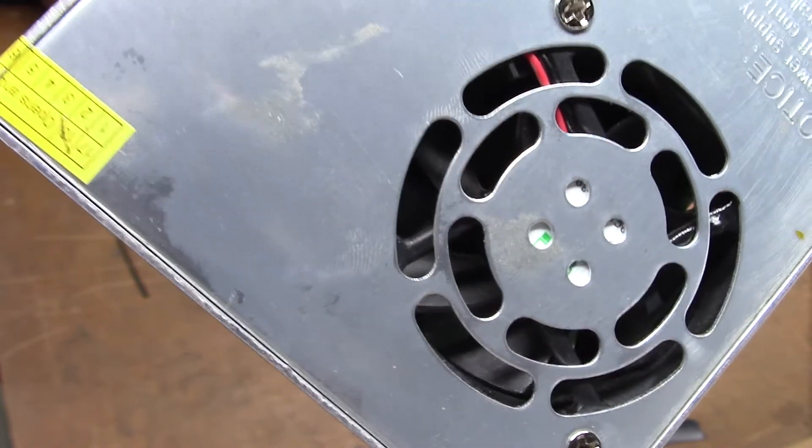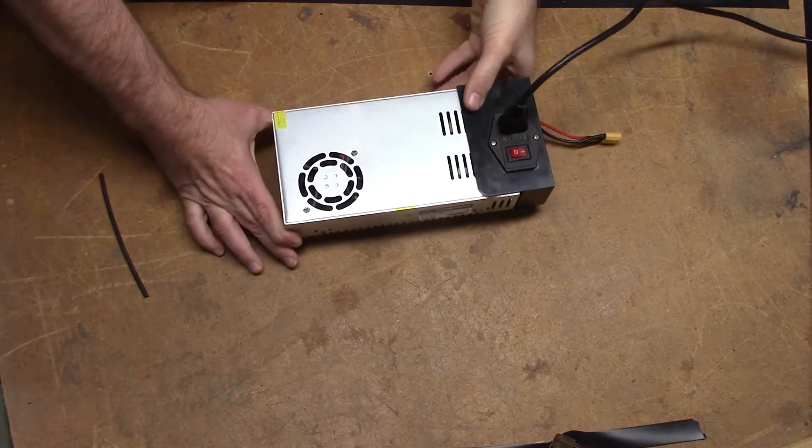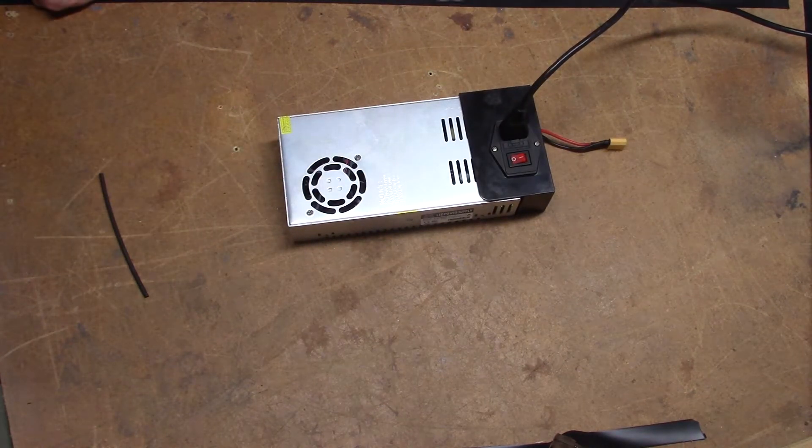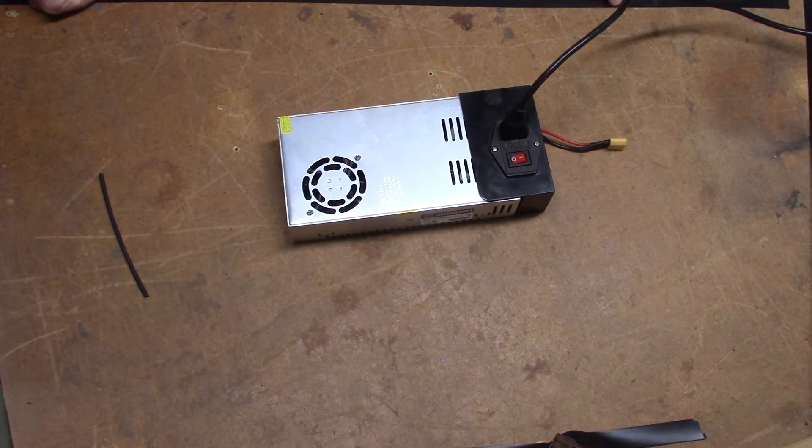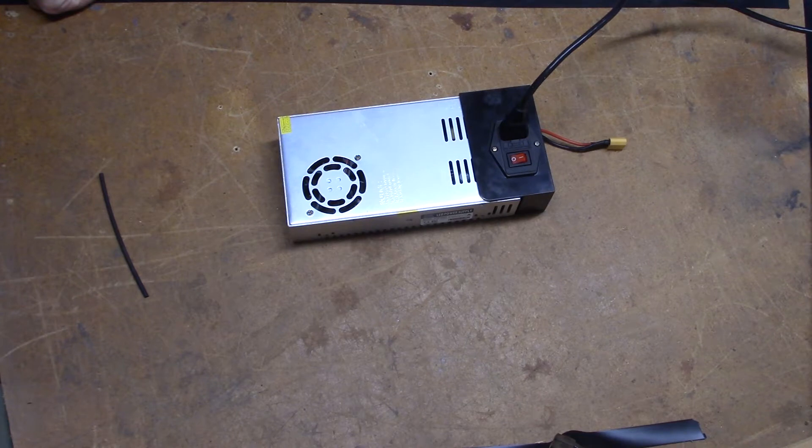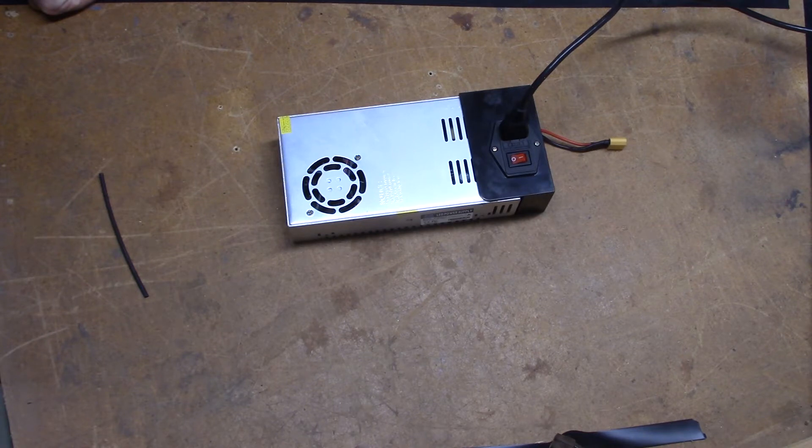This completes the modification of the power supply fan. Now I have this thermal switch installed in 3 or 4 of my 3D printers. They have been running for several months like this and I have not had any issues whatsoever. I hope you found this video informative. If you have, please like and subscribe to my channel. Also in the description below you will find links to the items I used to complete this modification, and also affiliate links for Amazon. Please use those links to support this channel. Thanks so much.